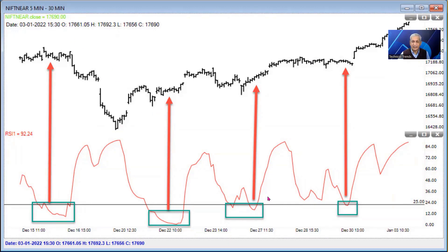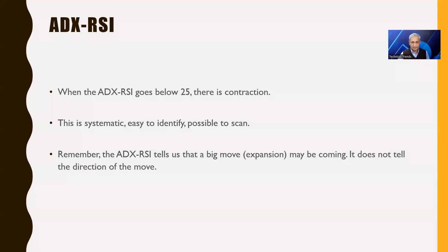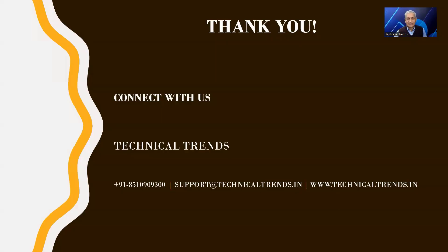When the RSI of the ADX is below 25, get ready for a move. This is a systematic approach — you can actually scan for it too. If you have 15, 20, or 30 stocks, you can scan and say: show me the stocks where the ADX RSI is below 25. That makes it so much easier than watching manually and not understanding what the ADX is doing.